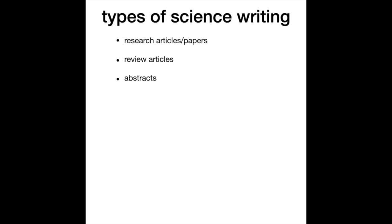Abstracts don't have to just be for articles. When you go to a conference and give a talk or a poster, you'll have to submit an abstract, and those abstracts usually get published in a book, sometimes electronically. This is how people decide what talks and posters they want to visit, so the abstract is really important. You might also have to write abstracts for grants and fellowship applications.